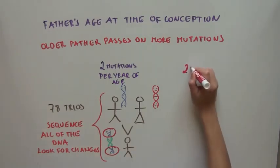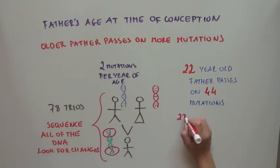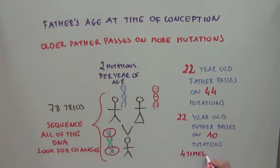So if the father was 22 years old when the child was conceived, then he passed on about 44 mutations to his child, and the mother only passed on about 10, or four times fewer than the father.